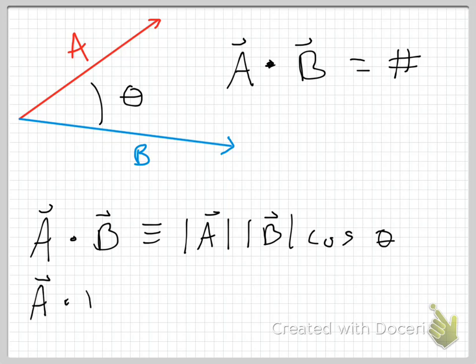So A dot B, in addition to the definition, may also be calculated like this. A sub X, that is the scalar X component of A. So take the X component of A, which we all know how to calculate. Take the magnitude of that. That is what I'm writing as A sub X.